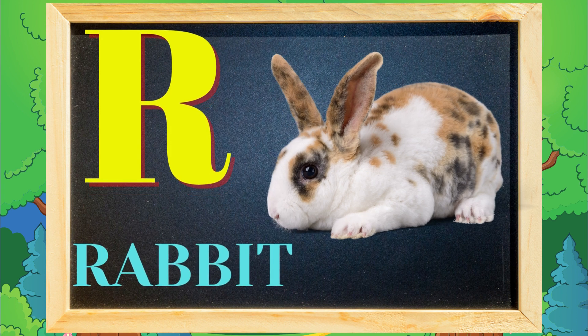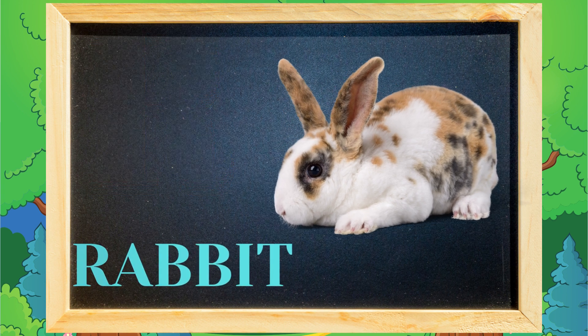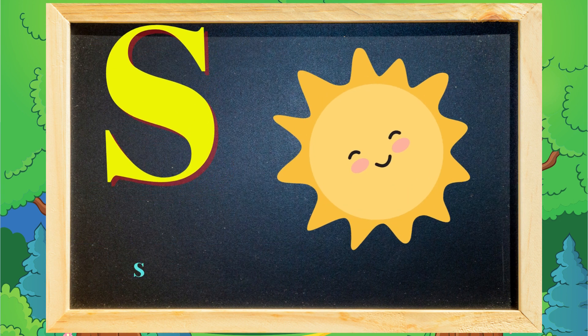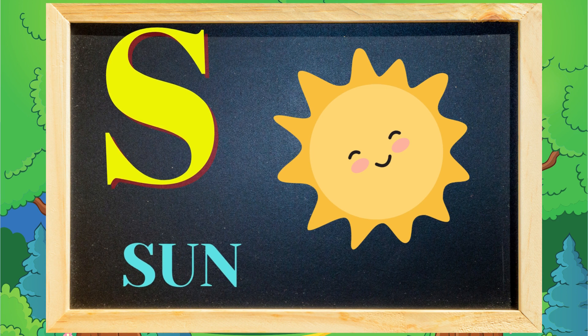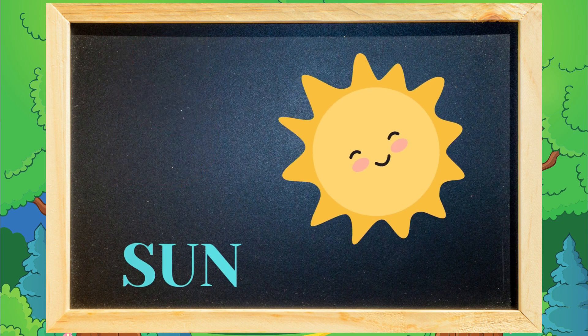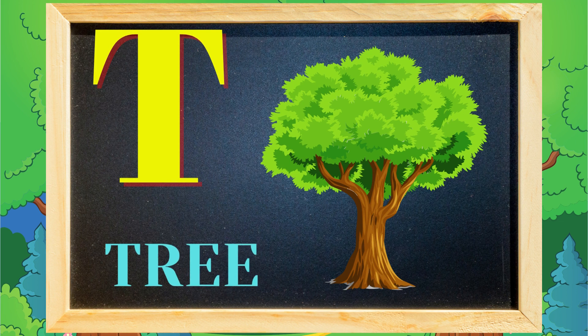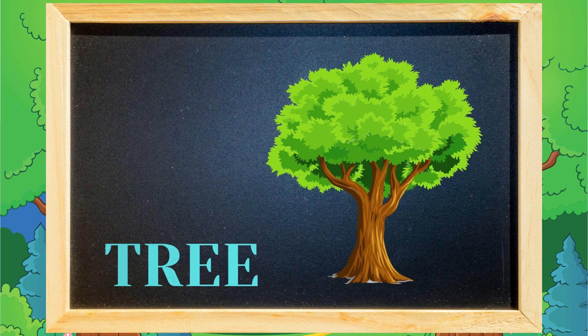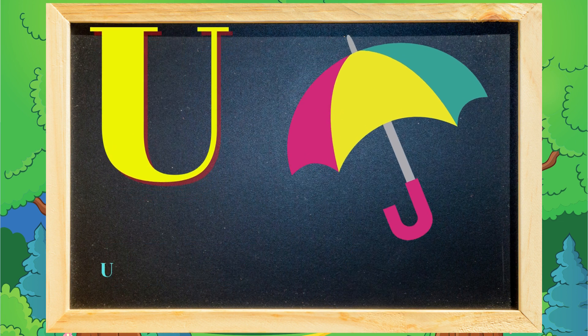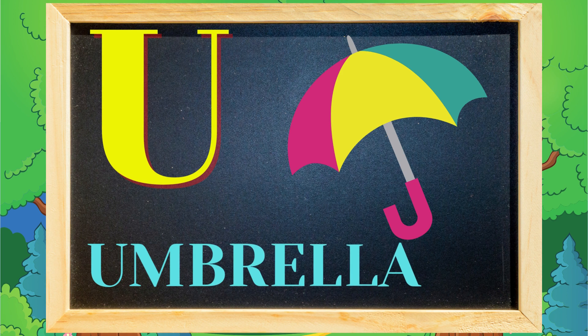rabbit means karbos. S for sun, sun means suraj. T for tree, tree means bed.